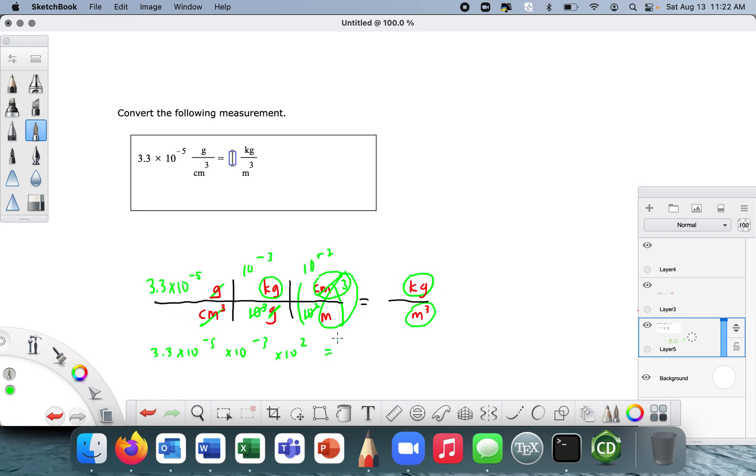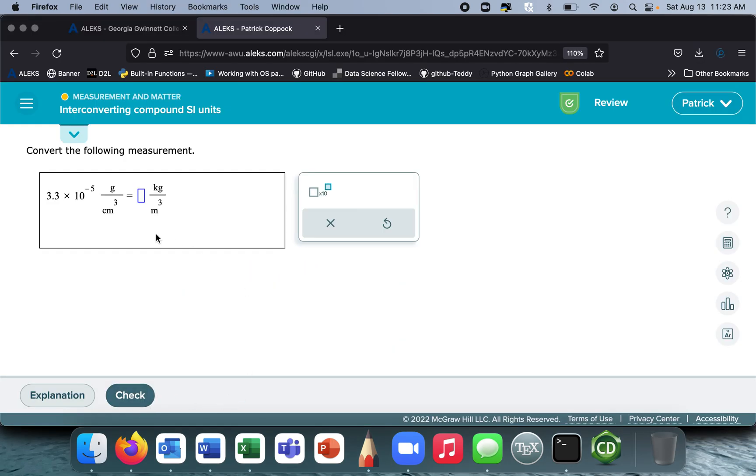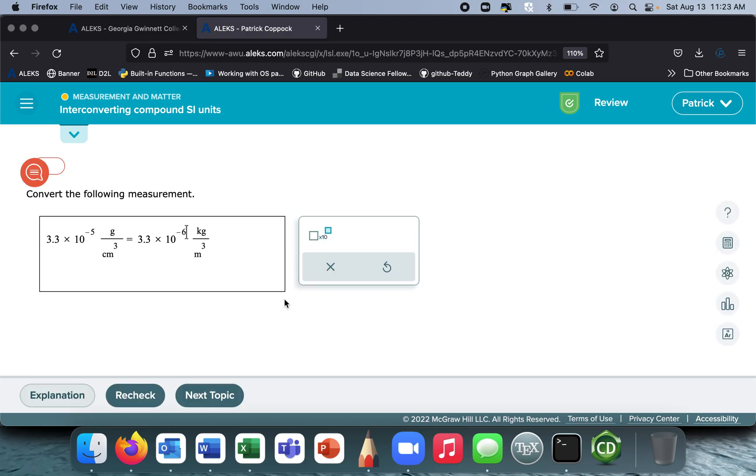So we're going to get 3.3, and let's bring all these guys together, right? Minus 5 and minus 3 is minus 8, plus 2 is minus 6, times 10 to the minus 6 kilograms per cubic meter. 3.3 times 10 to the minus 6 kilograms per cubic meter. Let's put that in. 3.3 times 10 to the minus 6 kilograms per cubic meter. All right, hopefully that's correct.